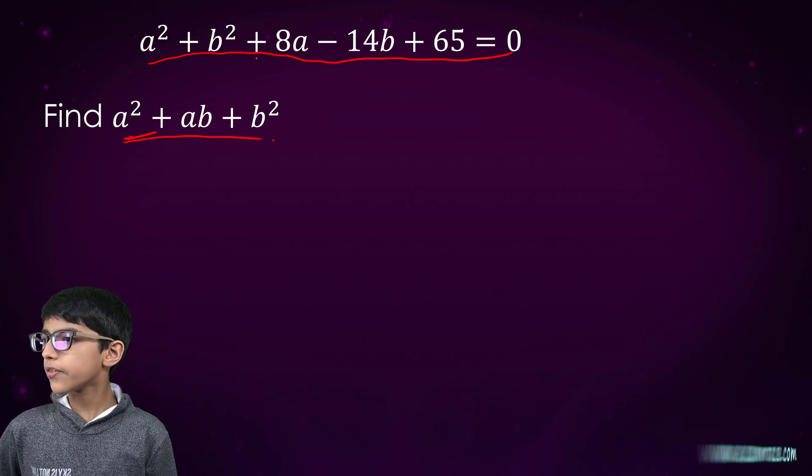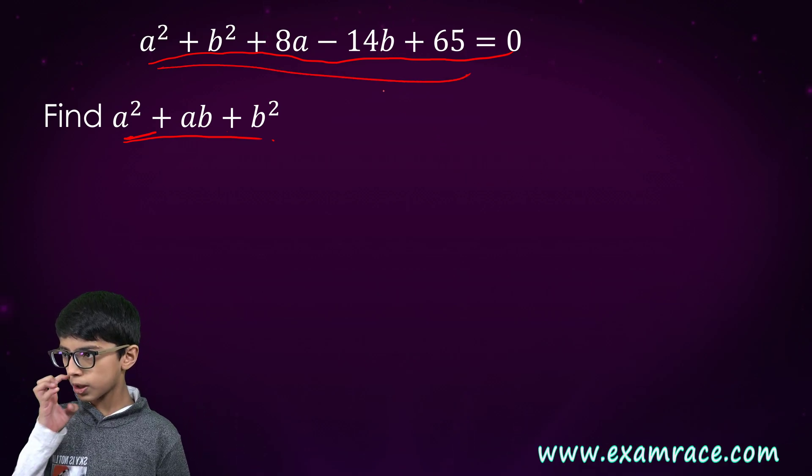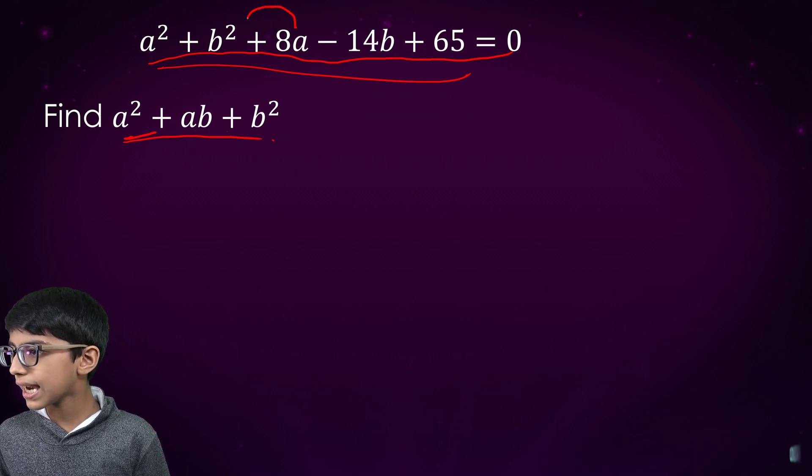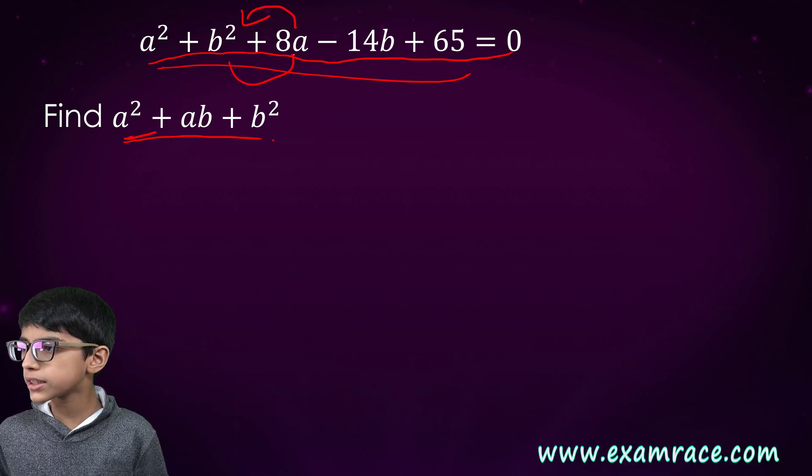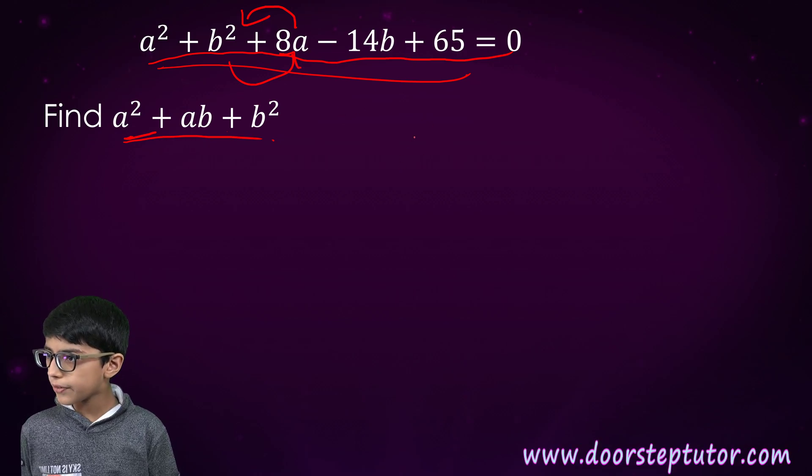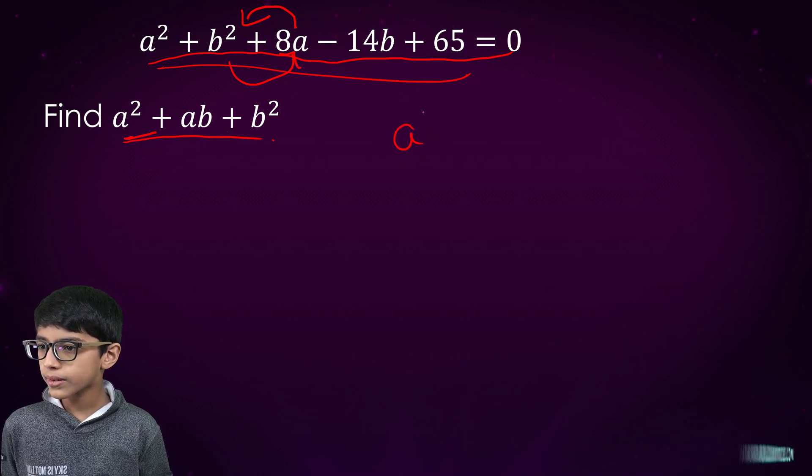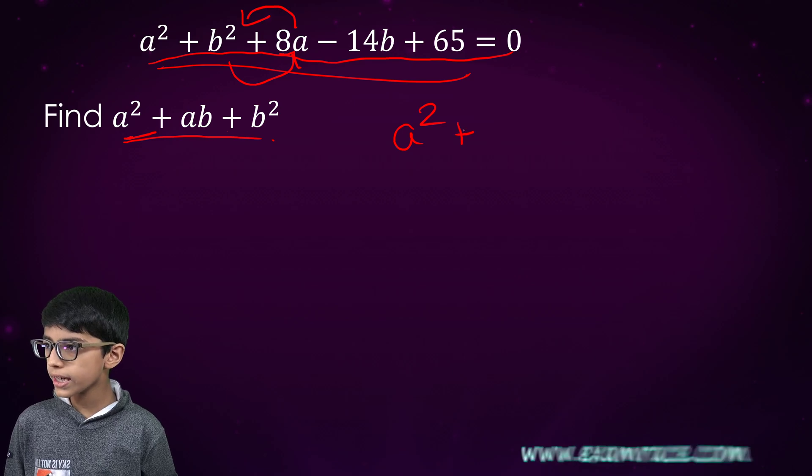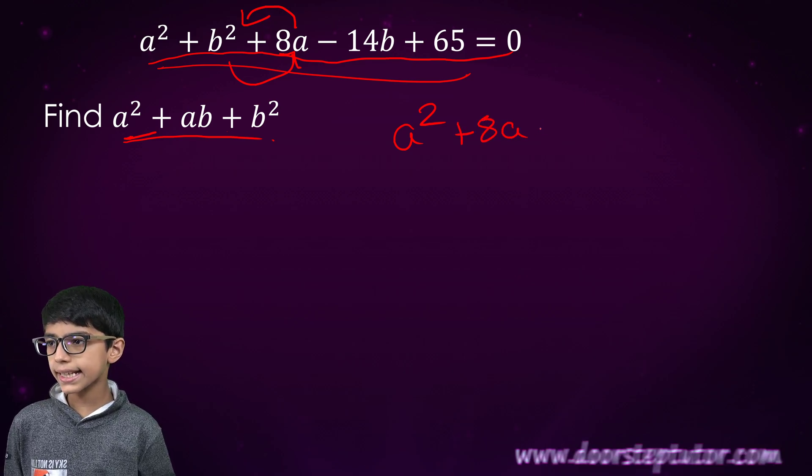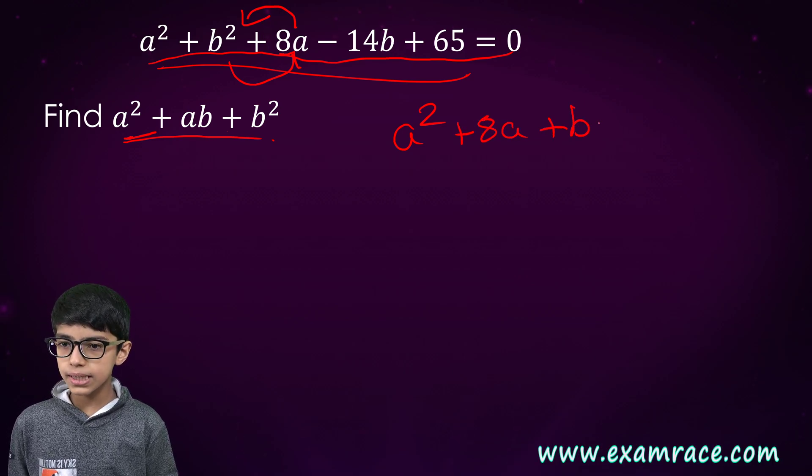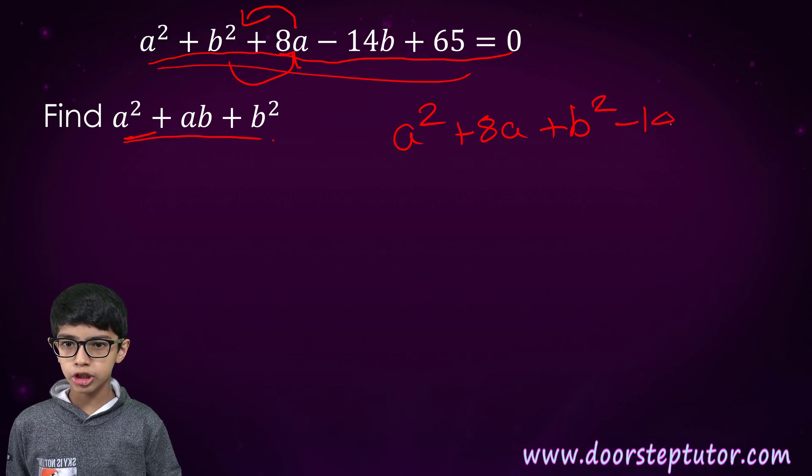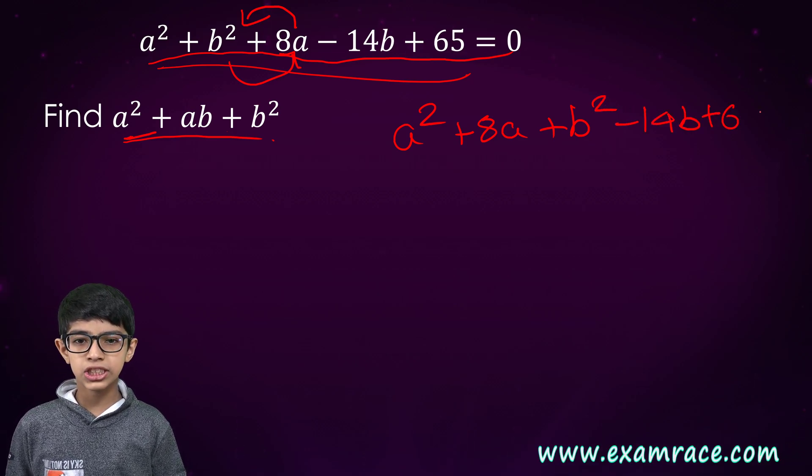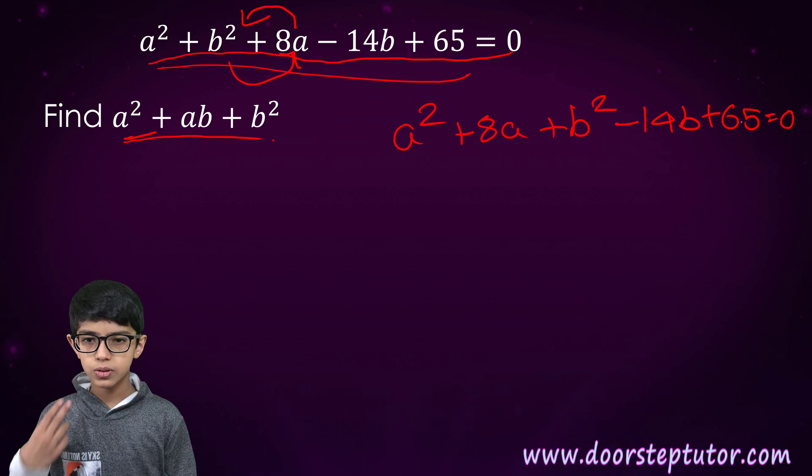First, we will rearrange this question. We will take 8a here and b² here. We can definitely do this. Therefore, a² + 8a + b² - 14b + 65 = 0.